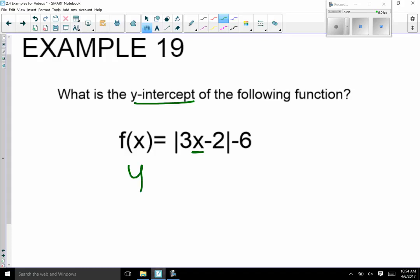Now f of x is just like saying y. I'm going to have the absolute value, 3, my x-value is 0 for the y-intercept, minus 2, absolute value, minus 6.